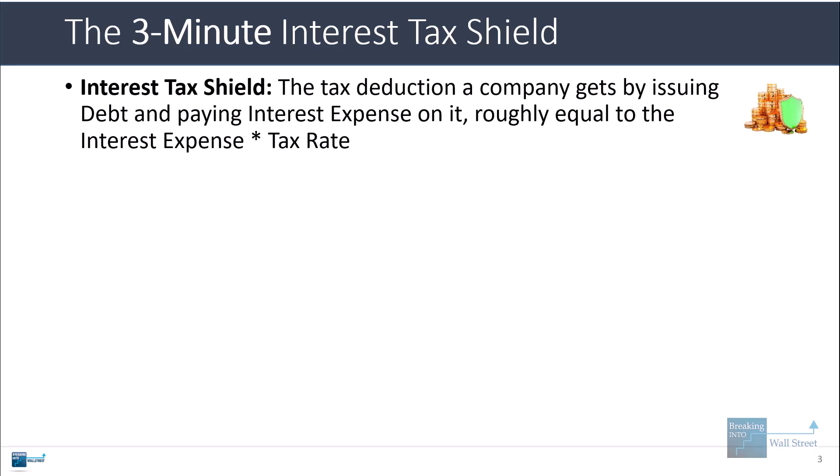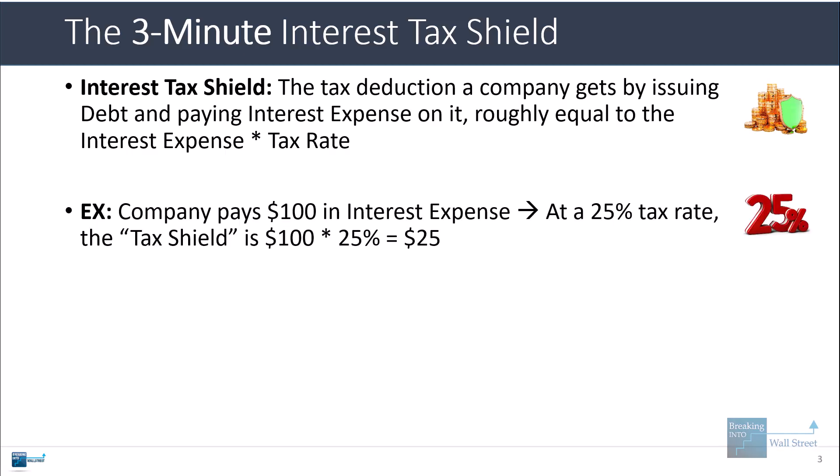The interest tax shield refers to the tax deduction a company gets by issuing debt and paying interest expense on that debt. It's roughly equal to the interest expense times the company's tax rate. So if a company pays $100 in interest and has a corporate tax rate of 25%, the tax shield is 100 times 25%, or $25.